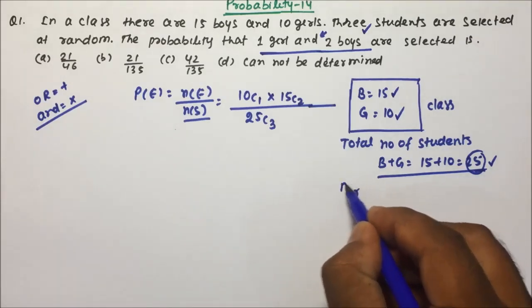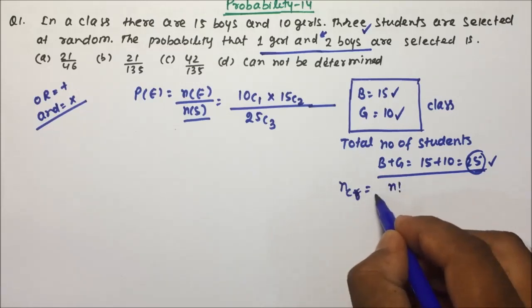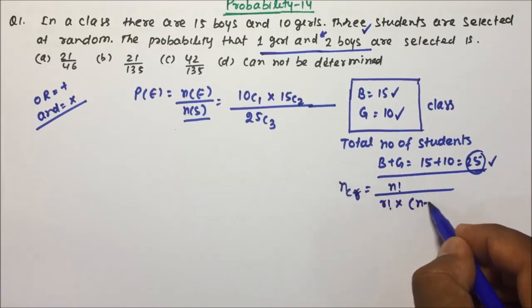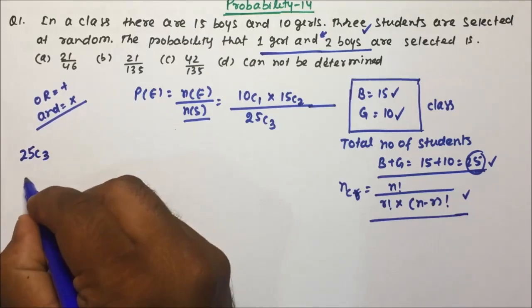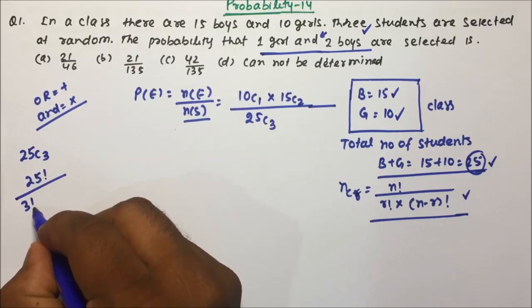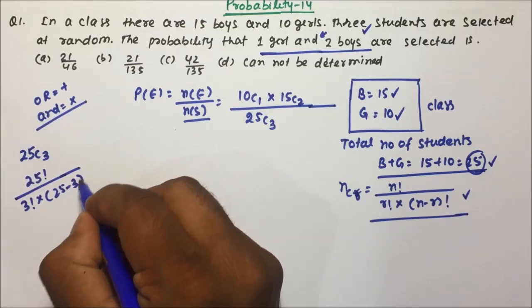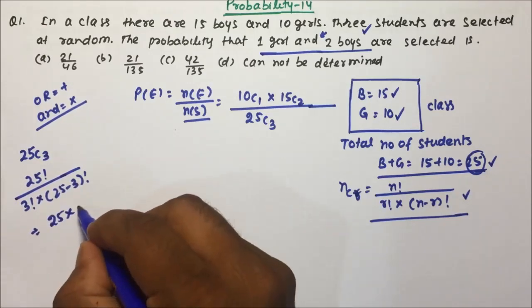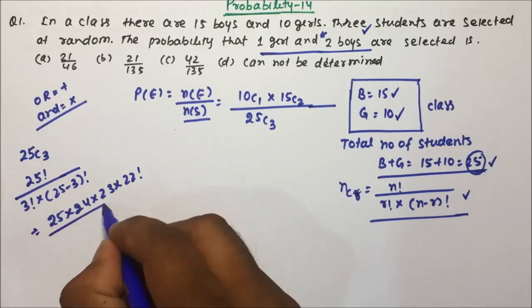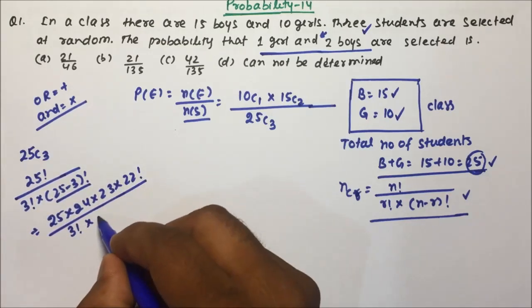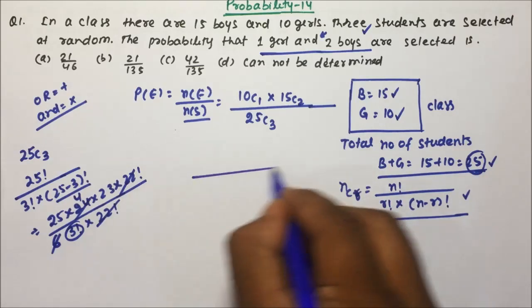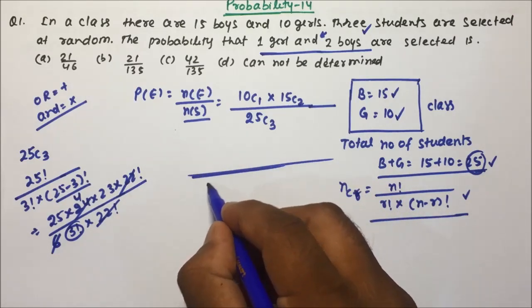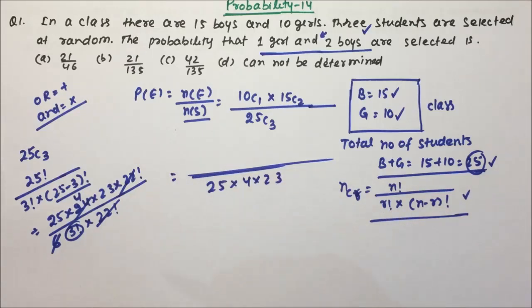NCR I have already taught you in the previous videos. NCR will be equal to N factorial divided by R factorial into N minus R factorial. Here we have to calculate 25C3. 25C3 will be 25 factorial expanded as 25 into 24 into 23 into 22 factorial — we will stop there because in the denominator also we have 22 factorial. So 3 factorial will be nothing but 6. Then 10C1 equals 10.